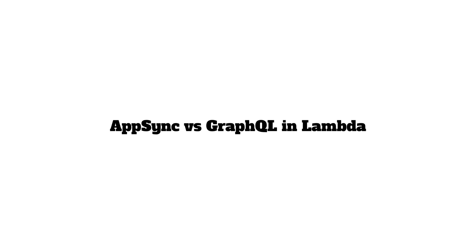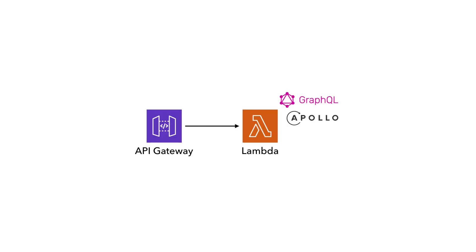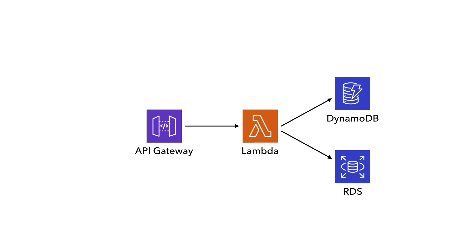In this lesson, let's compare AppSync with another popular way to build GraphQL APIs, which is to run a GraphQL server in a Lambda function. By running GraphQL.js or Apollo Server in the Lambda function behind an API Gateway endpoint, and write your own resolvers to connect those GraphQL queries to data in DynamoDB or RDS, or any other data source that you want to use.